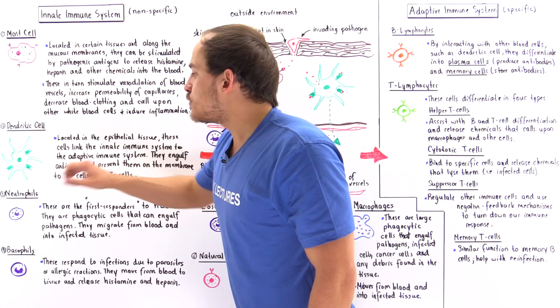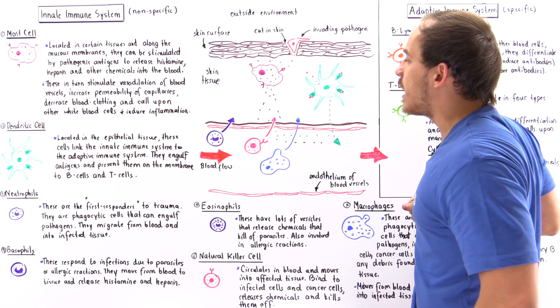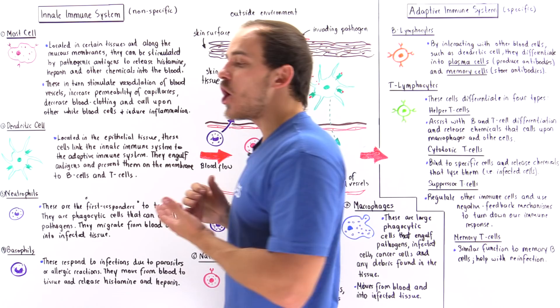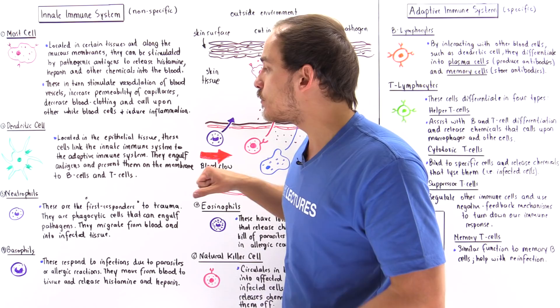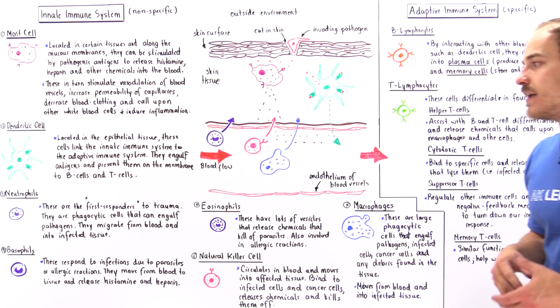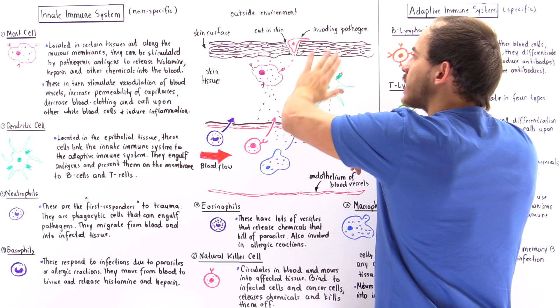Now let's move on to the cells found in the blood that are called upon by the chemicals released by the mast cell and other cells. Let's begin with a group of cells known as granulocytes. Granulocytes are named because they have granules — tiny vesicles that contain chemicals within the cytoplasm. We have neutrophils, basophils, and eosinophils. All these cells are found within the blood and respond to these chemicals by moving into the skin tissue where our infection is taking place.